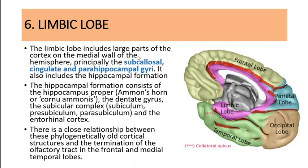Next is the limbic lobe — the sixth and final lobe we are going to discuss. It is perhaps the most difficult to understand because it is not as visibly well-defined as the other lobes. It includes large parts of gray matter across the middle portion of the brain, constituting parts from the subcallosal gyrus, cingulate gyrus, parahippocampal gyrus, and hippocampal formation.